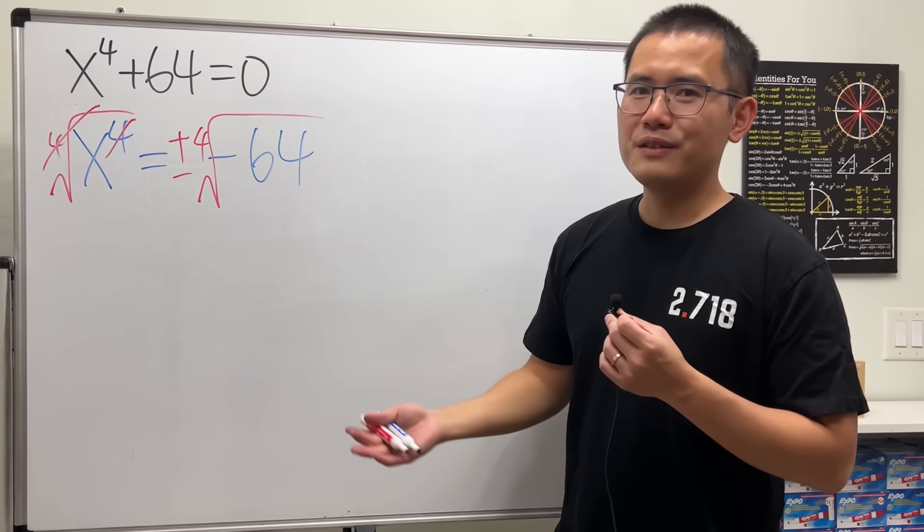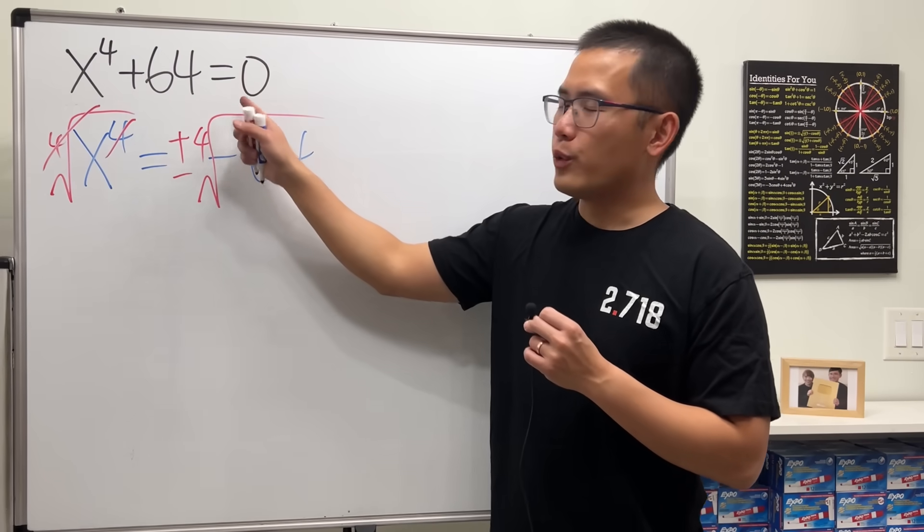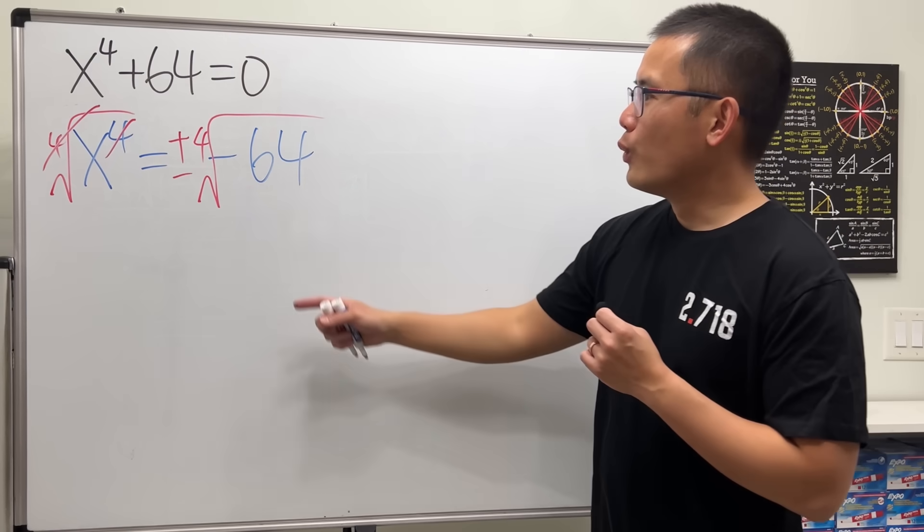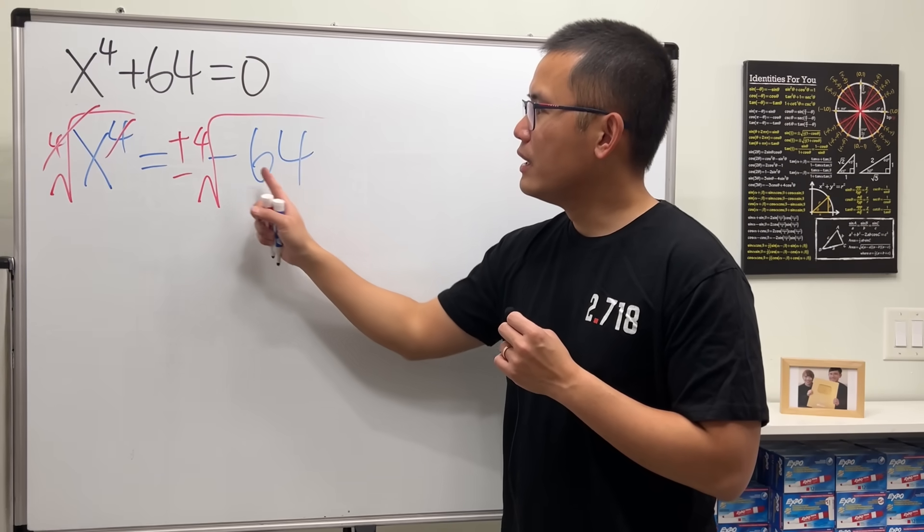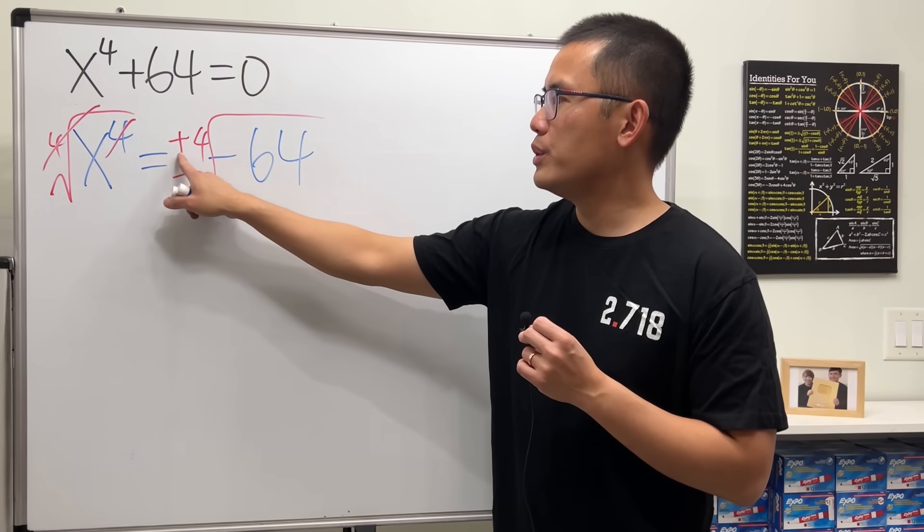Well, kind of. But please don't do it like this. Because, in fact, for this equation, we are not going to get any real solutions. Whenever we have a negative number inside of an even root, we are not going to get any real solutions.